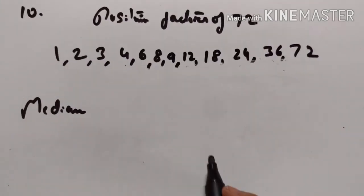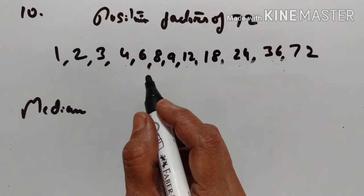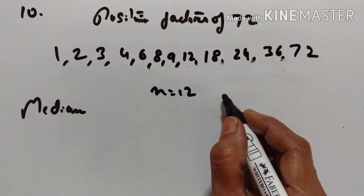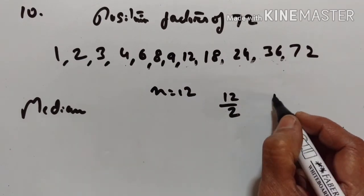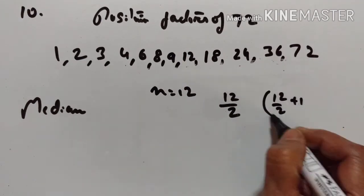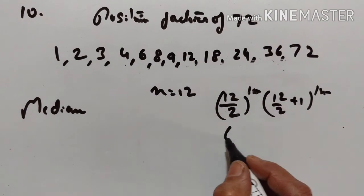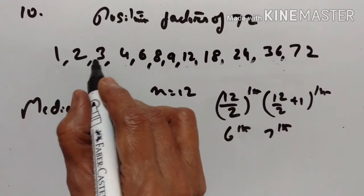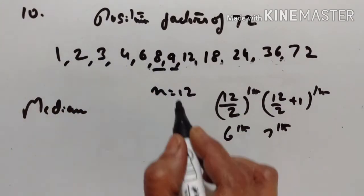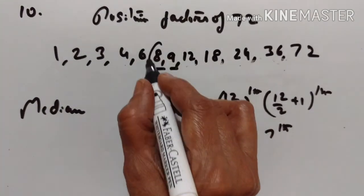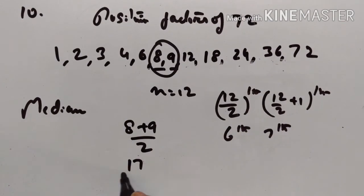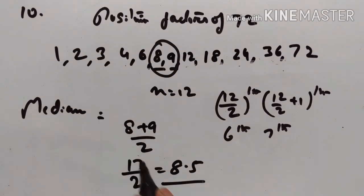Now find the median. The data is already in ascending order, and n is equal to 12. So we need n upon 2 and n upon 2 plus 1, that is the 6th and 7th terms. Counting: 1, 2, 3, 4, 5, 6 — the 6th and 7th terms are 8 and 9. Mean of 8 and 9 is 17 upon 2, equal to 8.5. So median is equal to 8.5.